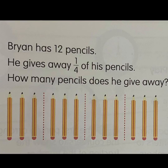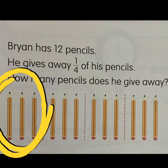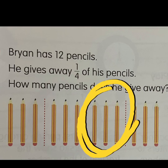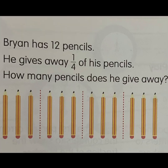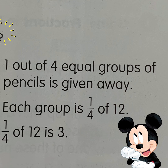Now let's look at another example. Brian has 12 pencils. He gives away one fourth of his pencils — how many pencils does he give away? There are 12 pencils and let's divide it into four groups, since here it is mentioned one fourth — he gave one group out of his four groups of pencils. This is the first group, second group, third group, and fourth group.